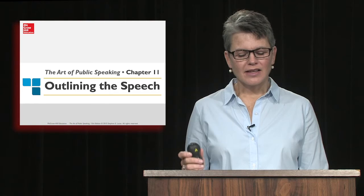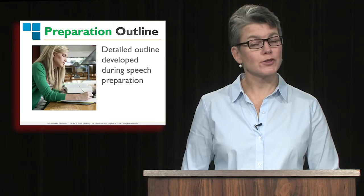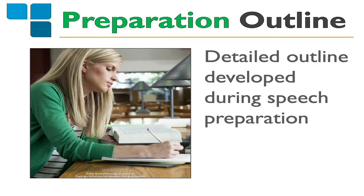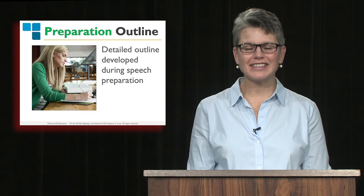The first thing to understand is that there are actually two types of outlines in a speech. The first one is called the preparation outline. The preparation outline is a full manuscript outline — it's the one you're working on that you will turn in and earn 50 points on in this assignment. It's the transcript of what you plan to say. It's got everything in it. It's actually quite a thick document, several pages long.